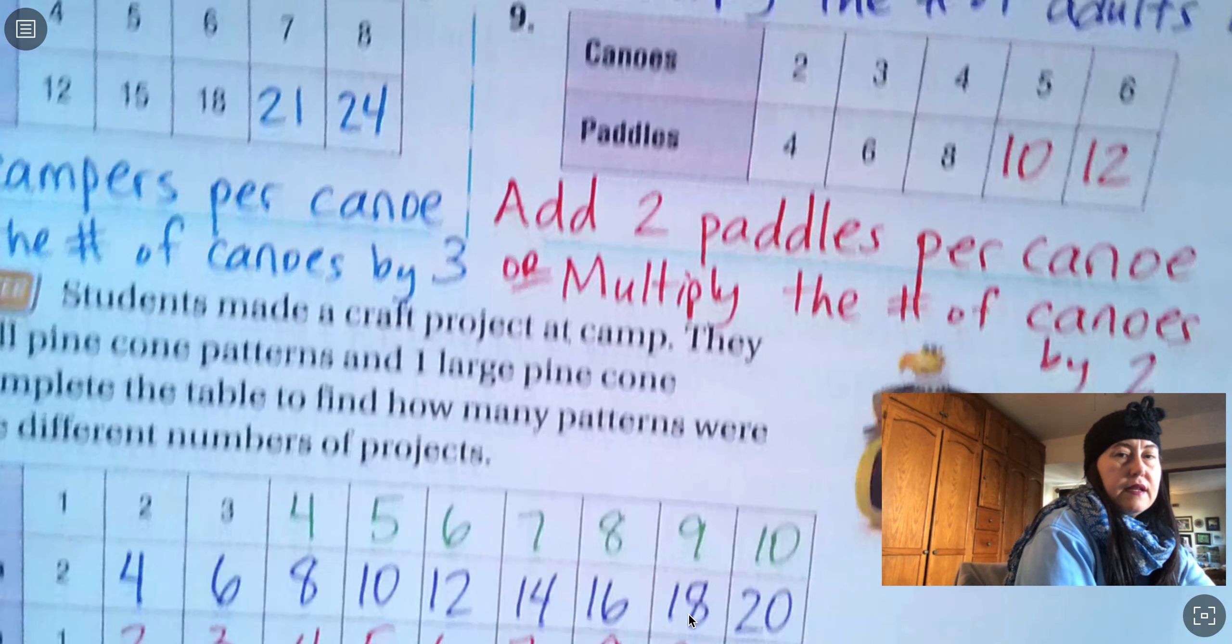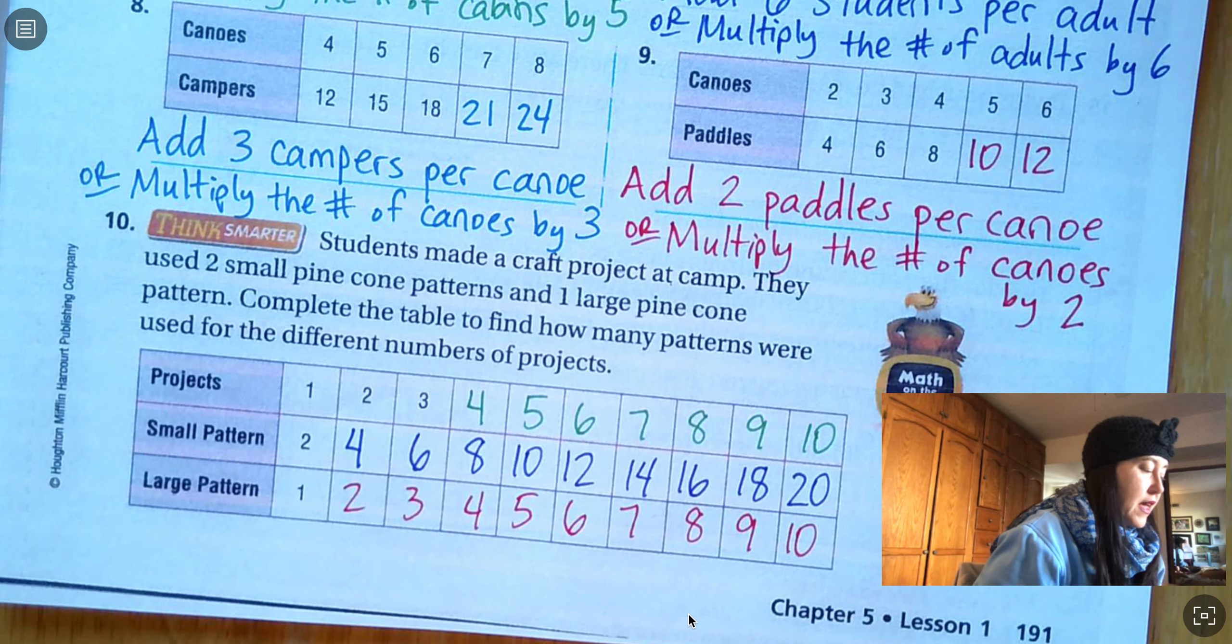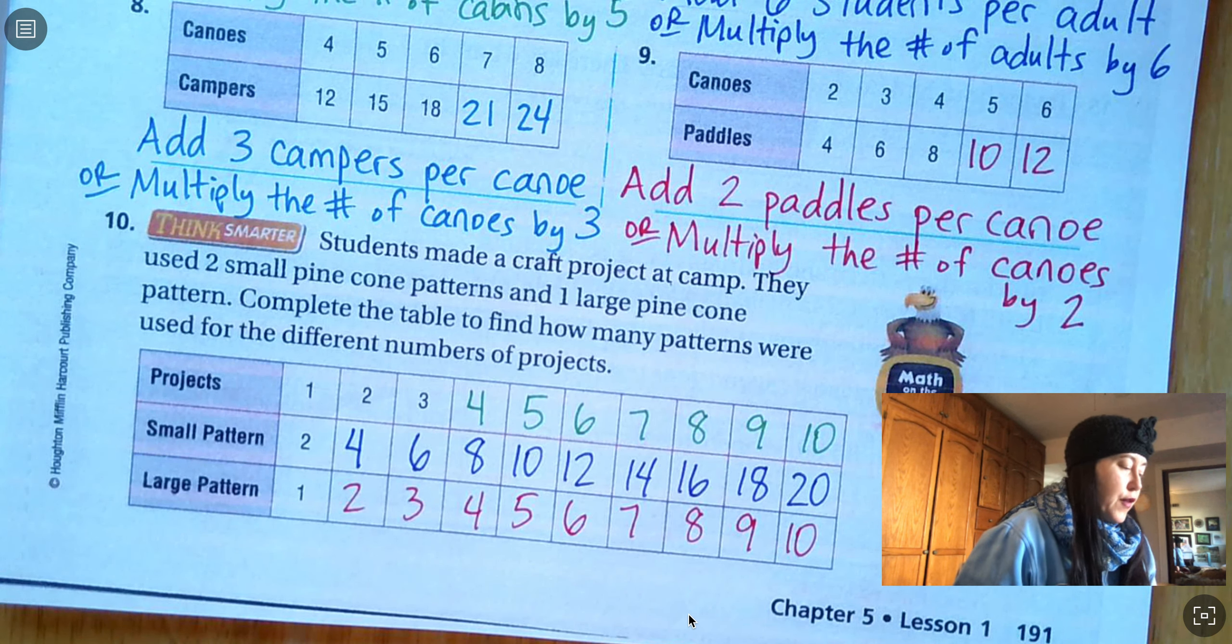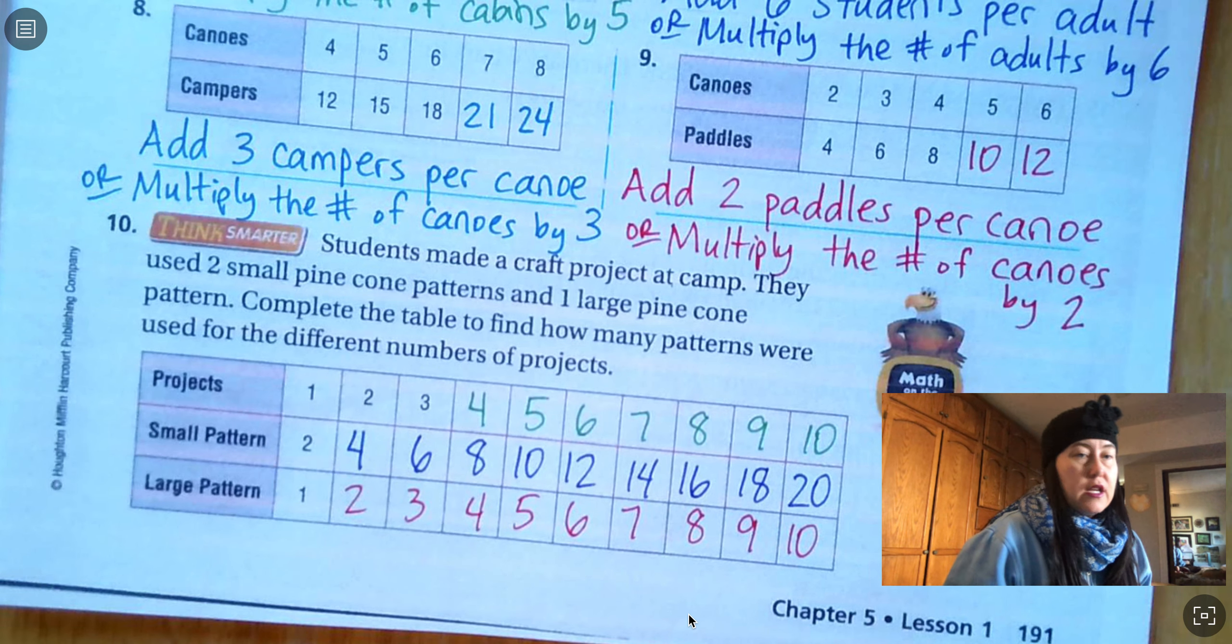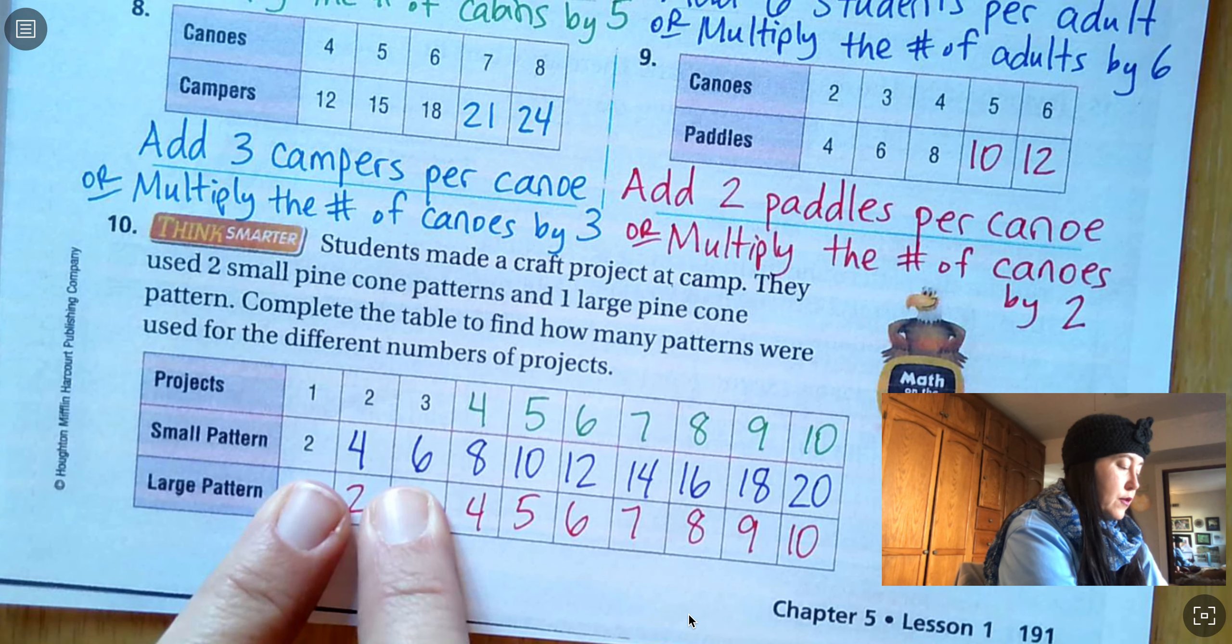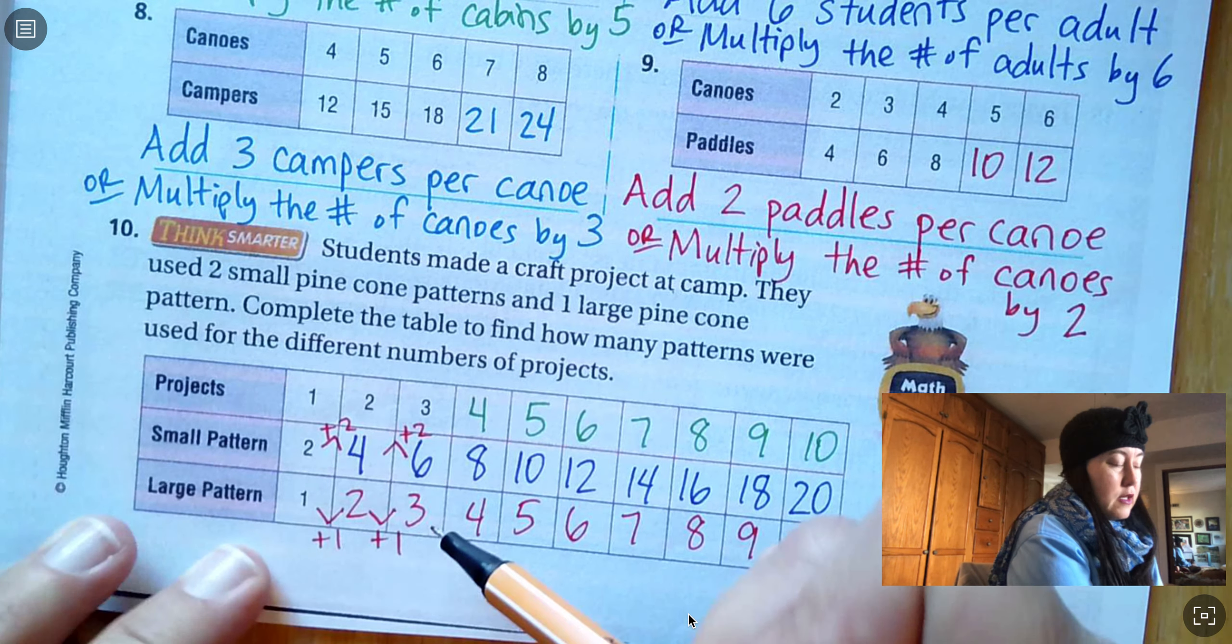Going down to number 10. It says students made a craft project at camp. They used two small pine cone patterns and one large pine cone pattern. Complete the table to find how many patterns were used for the different number of projects. So for one project, they used two small patterns and one large pattern. For two projects, they used double, right? Four small patterns and double the large patterns, one more. So our pattern, we're in the large pattern we're adding one each time. But the small pattern, we're adding two each time. Or we could say I'm going to multiply the number of projects by two to get the small pattern and the number of projects by one to get the large pattern.